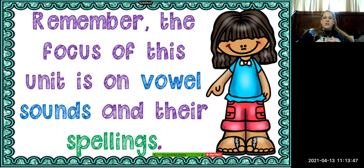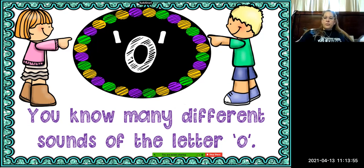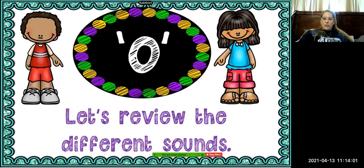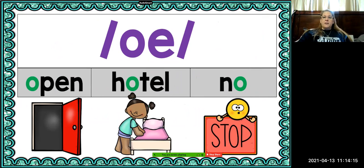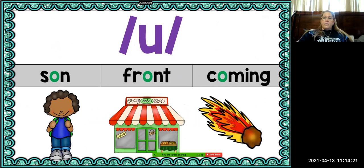The focus of this unit — unit five — is on vowel sounds and the way they are spelled. We know several different ways the letter O can sound. The first sound is "ah," like in hop, drop, and modest. The second sound is "oh," like in open, hotel, and no. The third sound is "uh," like in sun, front, and coming.